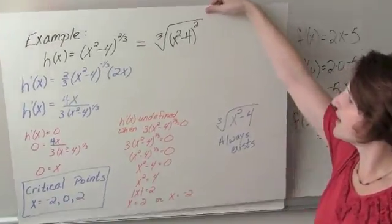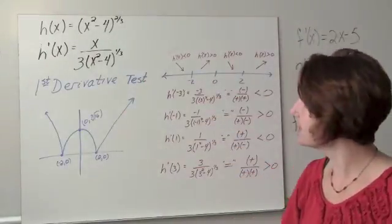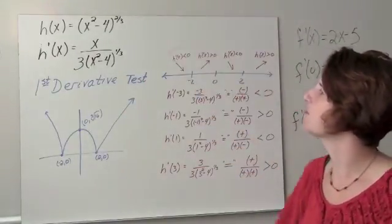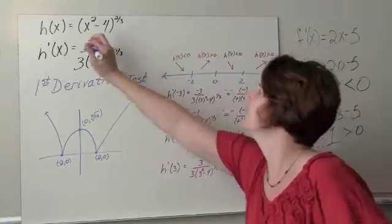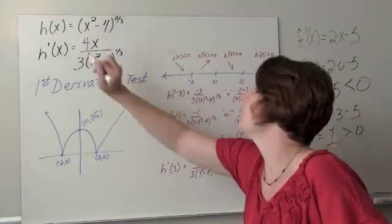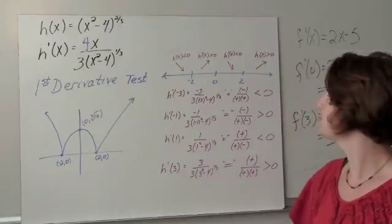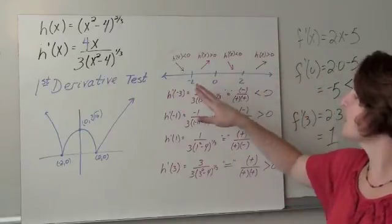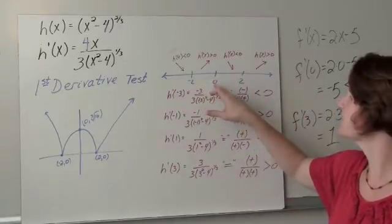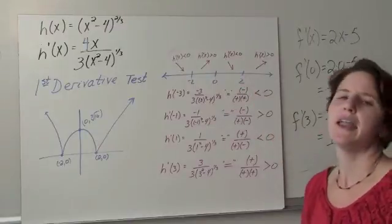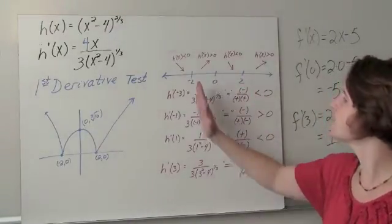So let's try and do the first derivative test. I just wrote down my function and the derivative, which is missing a 4 in it. Here's my number line. My critical points were negative 2, 0, and 2. And all I did was plug in numbers that were in these intervals.